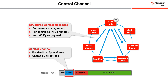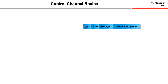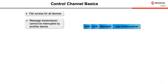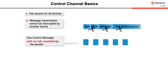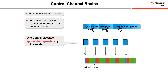It looks as if the head unit always initiates message traffic, but this is not necessarily the case. For example, if the user wants to switch to another movie, the rear seat display device could directly send a message to inform the head unit. An arbitration mechanism grants fair access to the control channel to all devices. Once a device has gained access to the network, it can send one complete control message without being interrupted by another device. The sender has a complete control message in its sending buffer, split up into quadlets and transported to the control channel of several consecutive network frames.